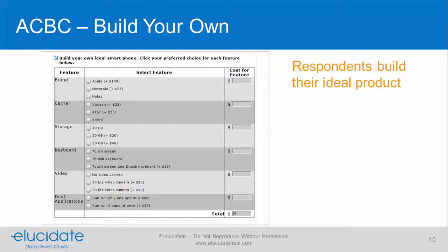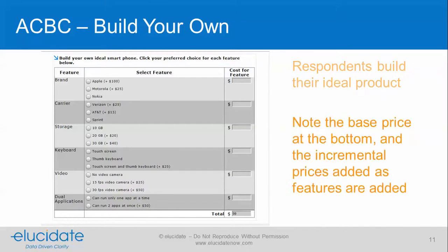Let's look at the first section of the ACBC — the build your own section. Here respondents build their ideal product. Note the base price at the bottom and the incremental prices that are added as features are chosen.